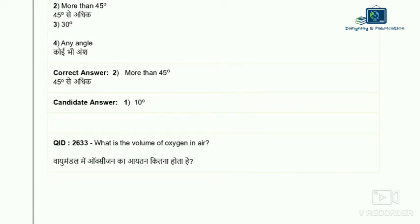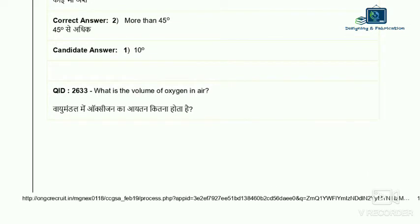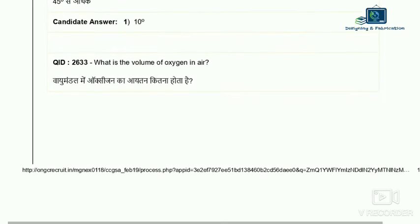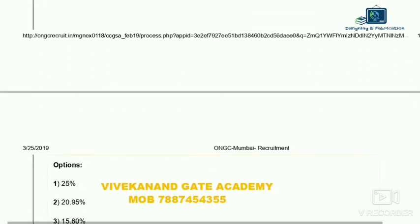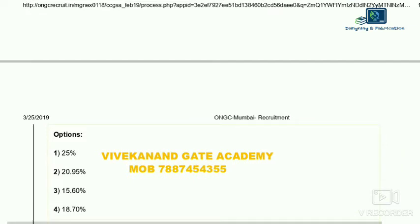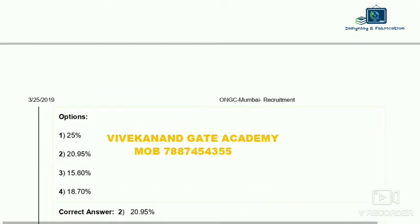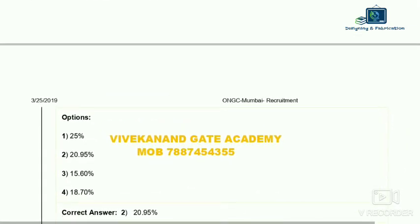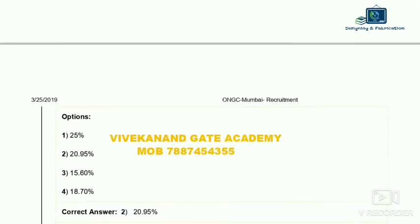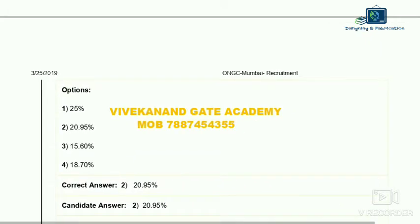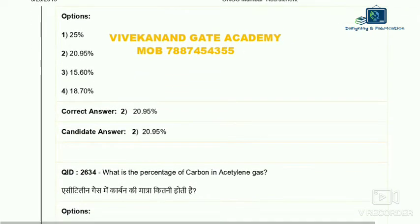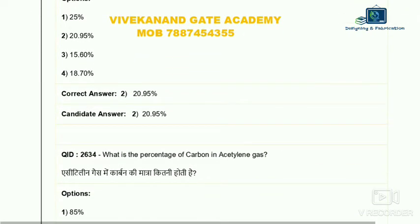Question 33: what is the volume of oxygen in air? The options are 25%, 20.95%, 15.6%, and 18.7%. Normally oxygen is about 19 to 21 percent in atmosphere. The correct answer is 20.95 percent — option two.